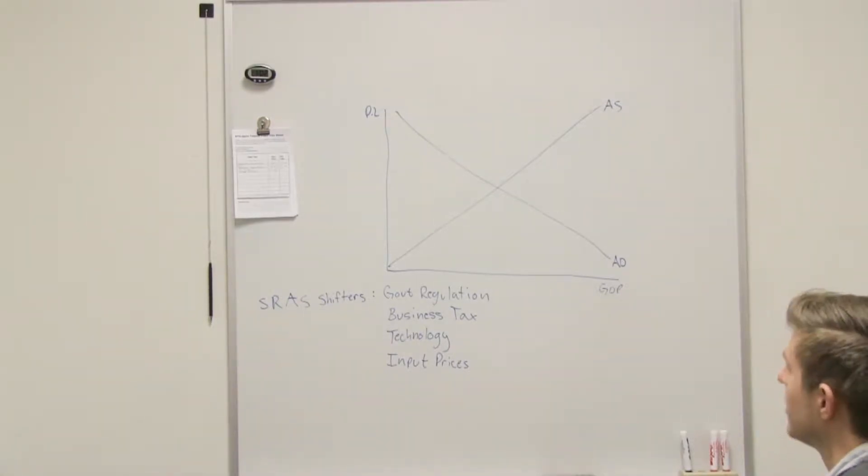Say right and left. This one is down and to the right instead of up and to the right to increase. Oh, I was thinking up and to the left. Oh, you were thinking up and to the left if they decrease business taxes?